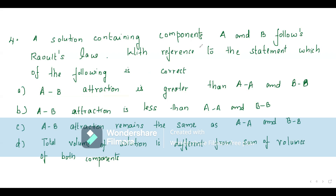Solution containing components A and B follows Raoult's law. Since it obeys Raoult's law: A-B attraction greater than A-A and B-B? No. A-B attraction less than A-A and B-B? No, because it obeys Raoult's law. A-B attraction remains the same as A-A and B-B attraction — there is no change in force of attraction and no change in volume. The last option says volume differs from the sum of volumes — that is wrong. Correct option is C.